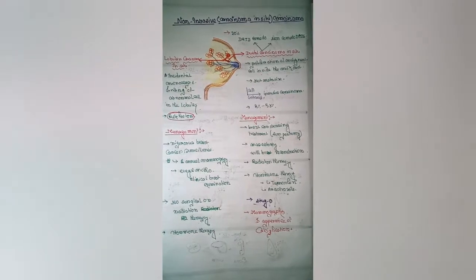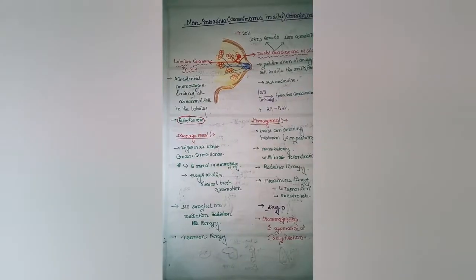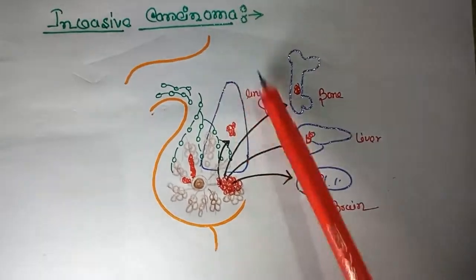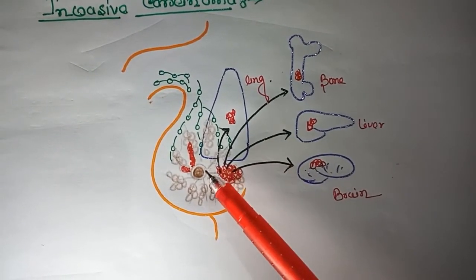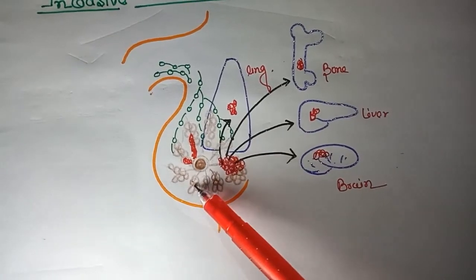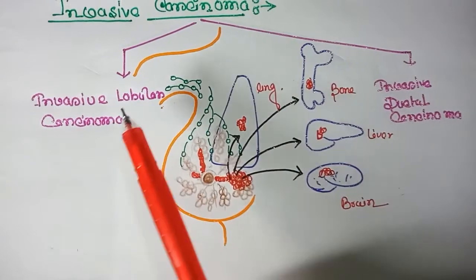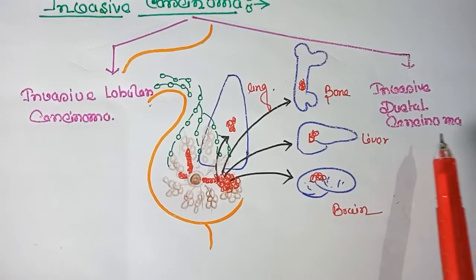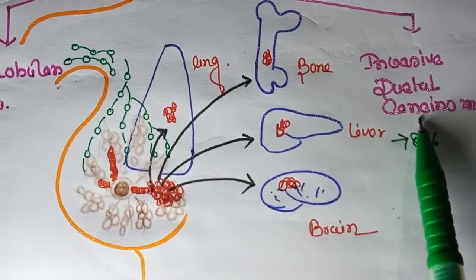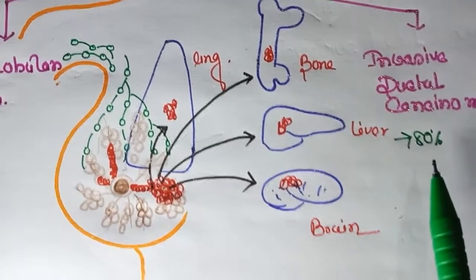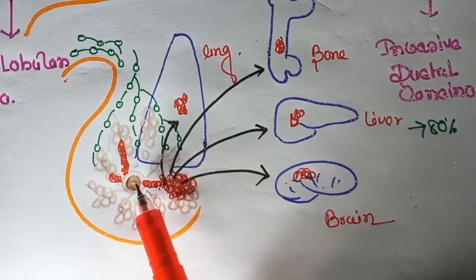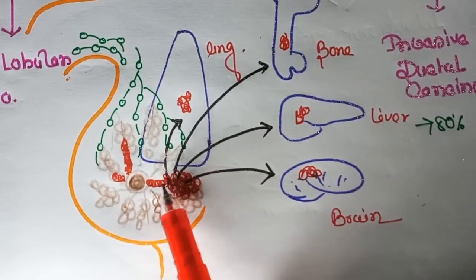For a quick recap, the presence of malignant cells within the ducts or lobules is called non-invasive carcinoma or carcinoma in situ. In invasive carcinoma, the malignant cells have penetrated through the basement membrane into the stroma. Invasive carcinoma is classified into two types: invasive lobular carcinoma and invasive ductal carcinoma. Invasive ductal carcinoma is the most common type of breast carcinoma, accounting for 80 percent of all cases.